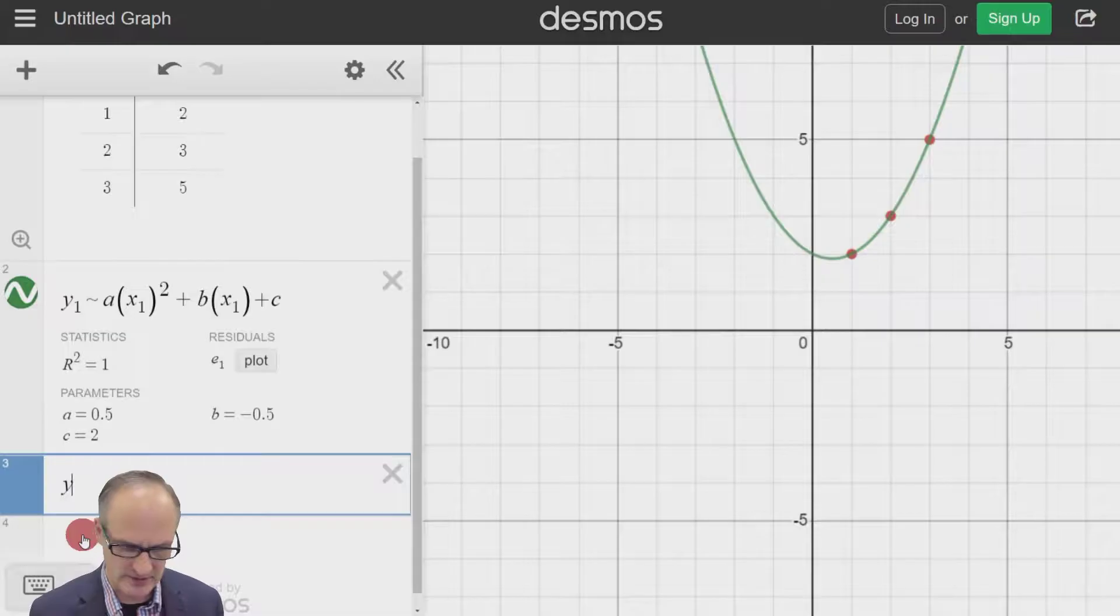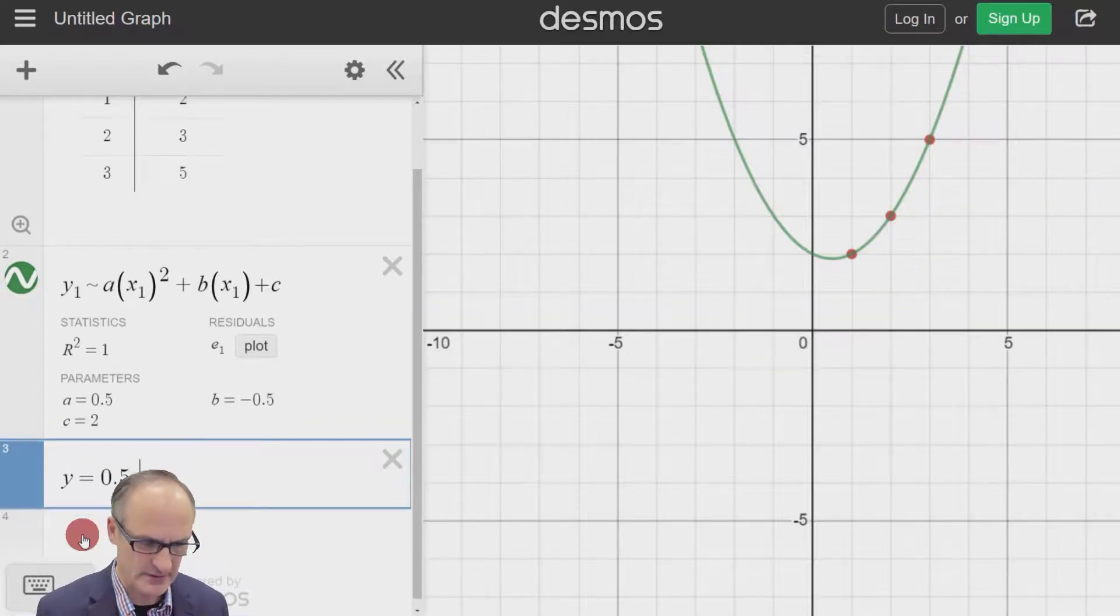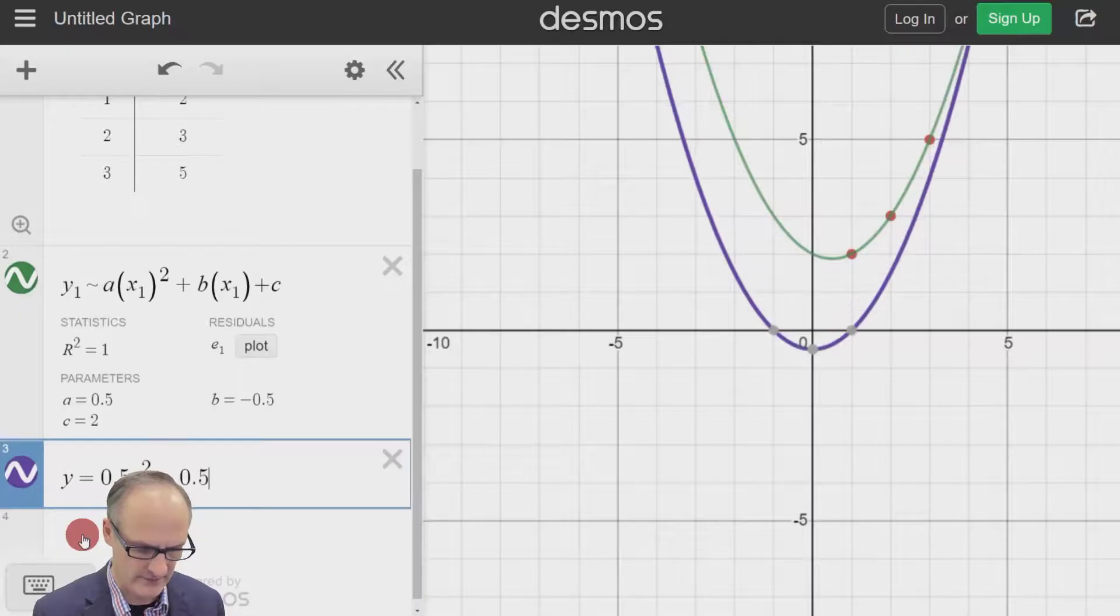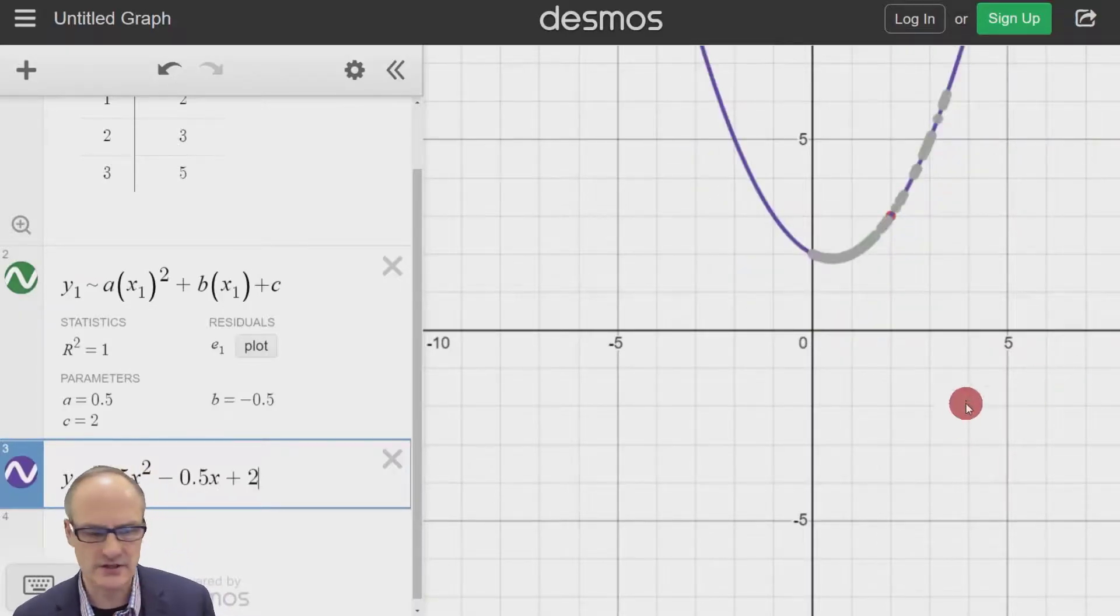So if we just type that as a normal equation, let's just do that, just to check. 0.5 X power two minus 0.5 X plus two. And we see it goes straight on top of our original curve.